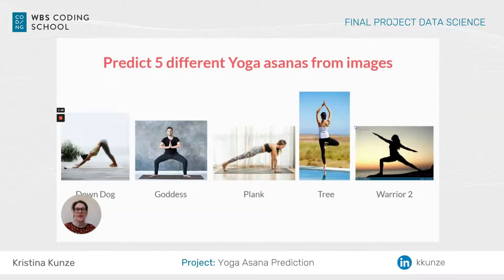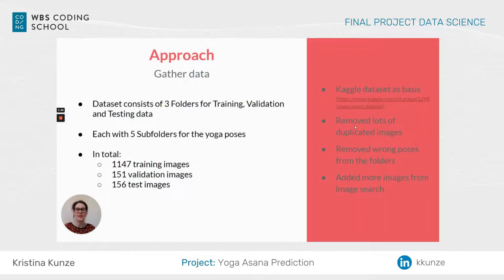Therefore, I want to help people do yoga asanas correctly with an app. And the first step is to predict five different yoga asanas from images. First of all, I gathered some data. I used a Kaggle dataset, had to remove some duplicated images and some wrong poses, and I also added some more images.